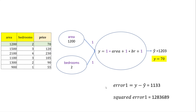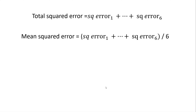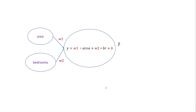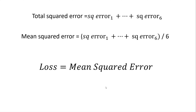We square the error because it helps gradient descent converge better — I'll make a separate video explaining why we don't just take the absolute value. Going through all samples one by one and accumulating these squared errors, then taking the mean, gives you mean squared error (MSE), also called the loss. Once you have the loss, you back-propagate that error.